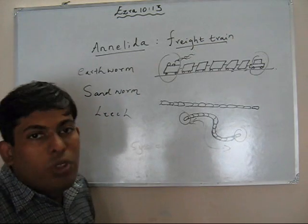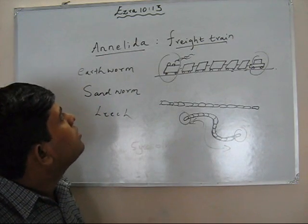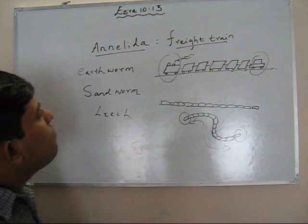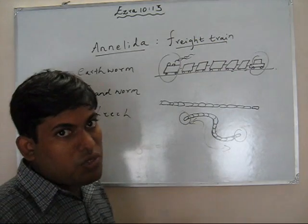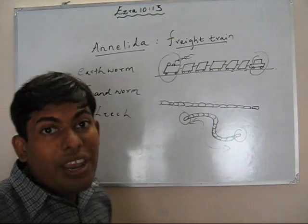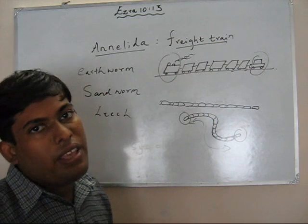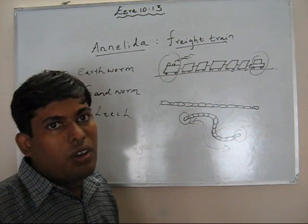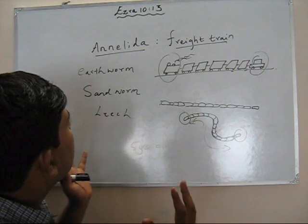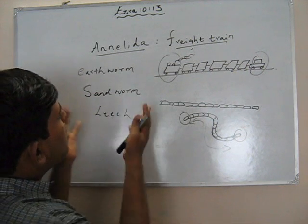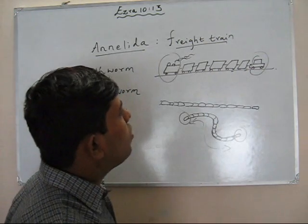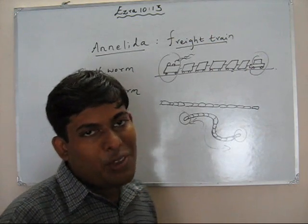The analogy is now established. The Annelids, or Annelida, are worms which have segmented bodies that resemble the freight cars pulled by the engine. This is the analogy which relates the worms with the train cars, or the train. Thank you.